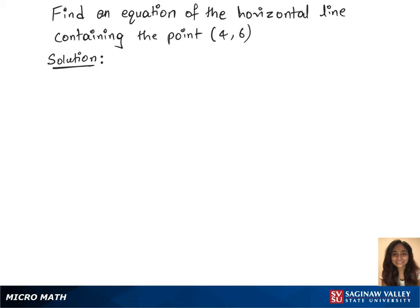To find an equation of the horizontal line containing the point (4, 6), we need to know the horizontal line formula, which is y equals b. Now we have the point which is (4, 6), that is x and y.